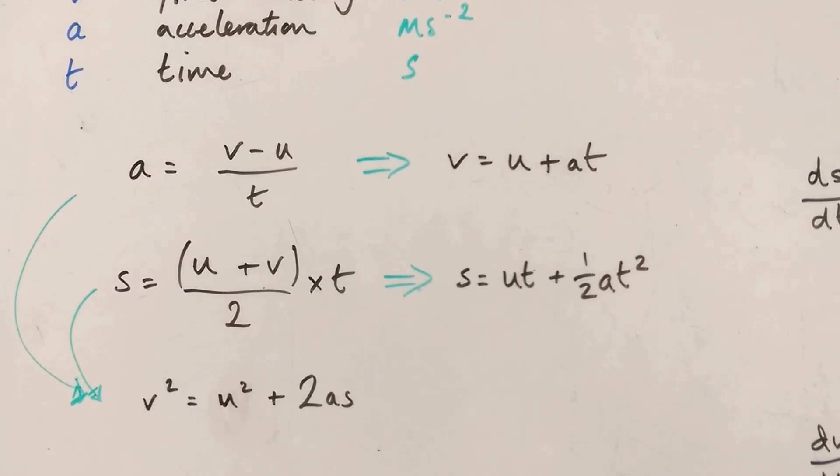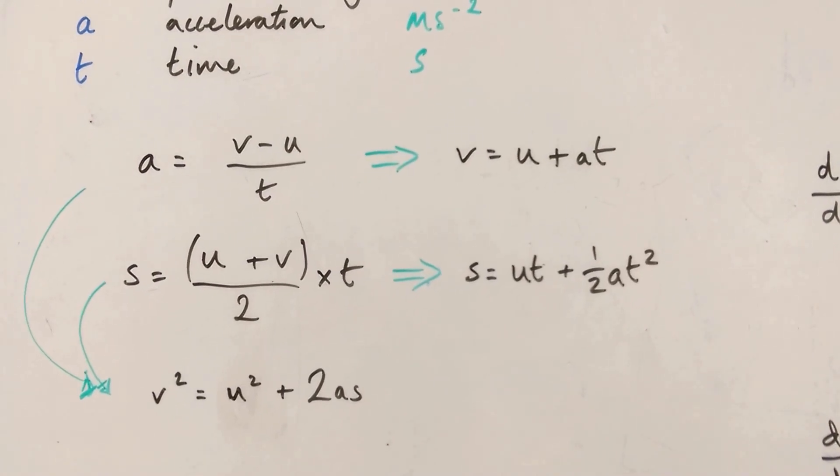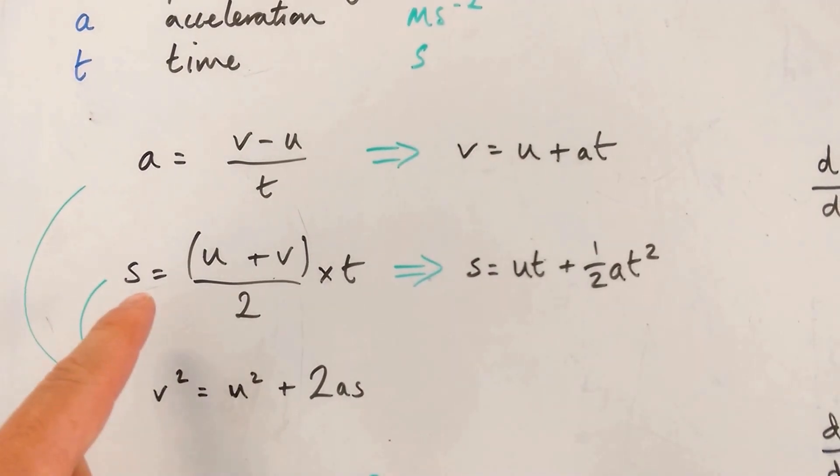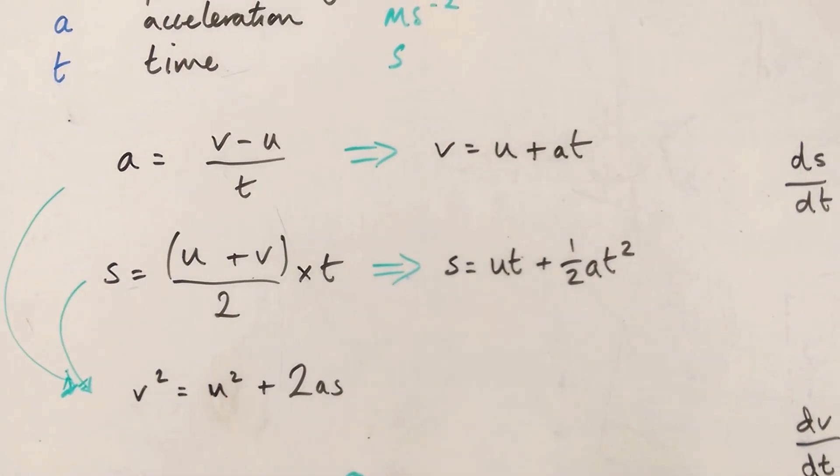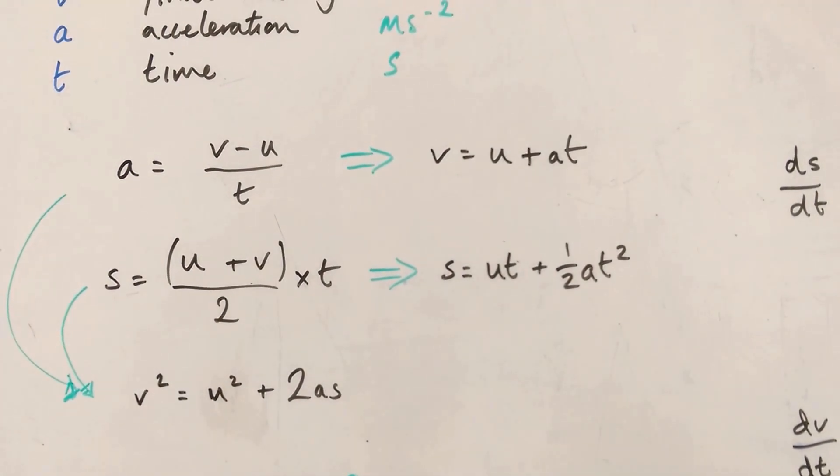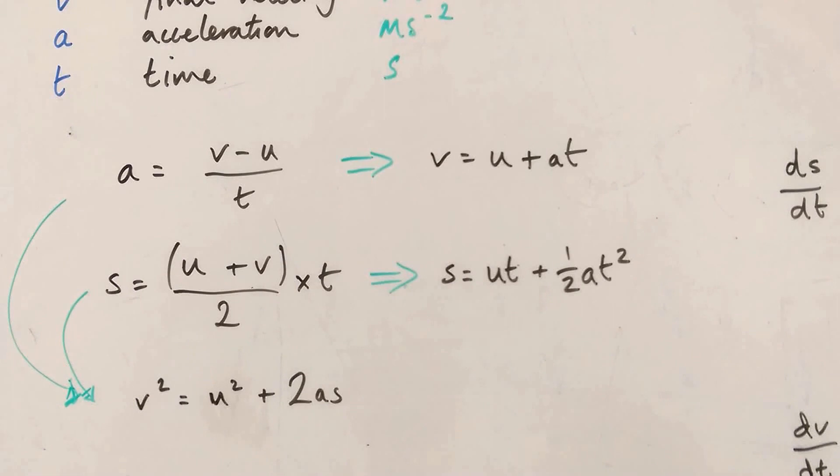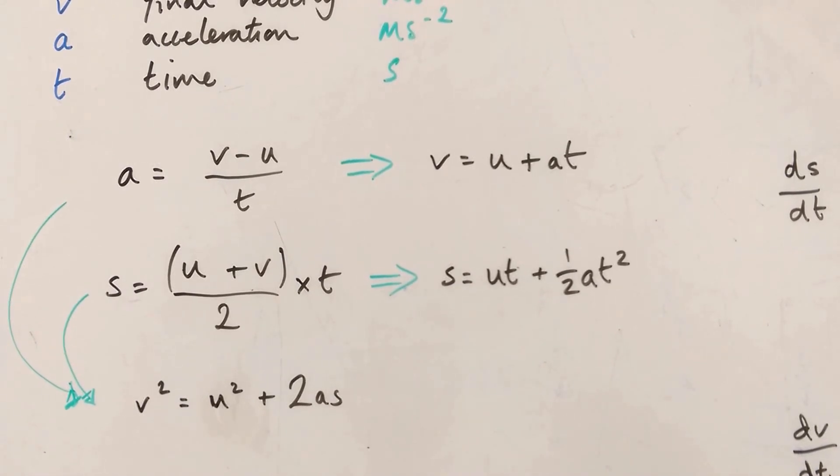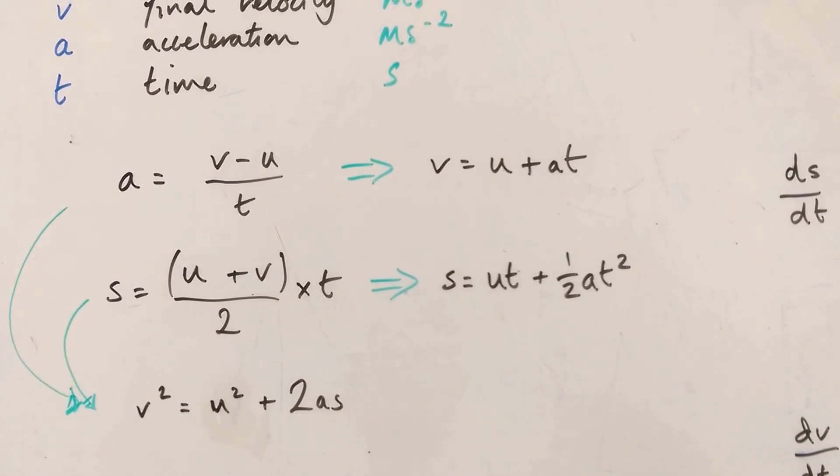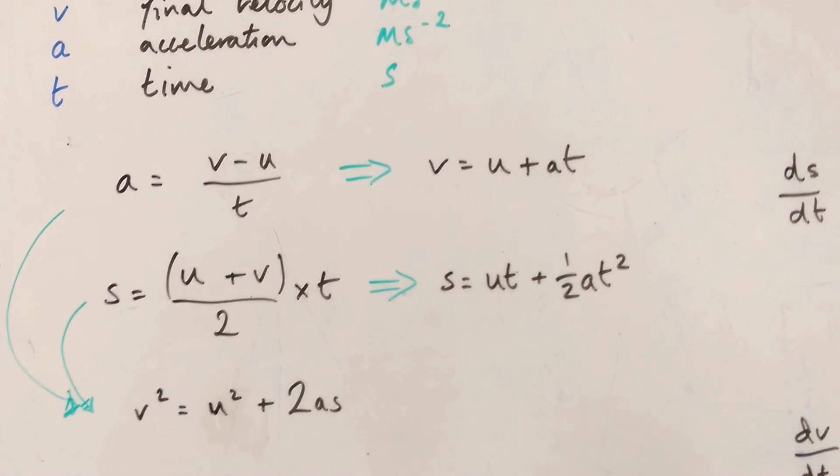The second equation is for displacement. If you've got a changing velocity, then displacement is the average velocity, v plus u over two, times by the time. And indeed, if you actually input the first equation, v equals u plus at, into that second equation in the place of v.